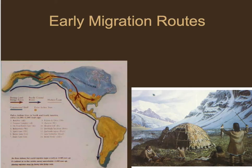Because sea levels were lower, it allowed people to migrate to different areas more easily. There was no British Channel at this point, so people migrated from the continent of Europe into what became the United Kingdom. People also migrated to North America and South America — essentially every continent on Earth except Antarctica.